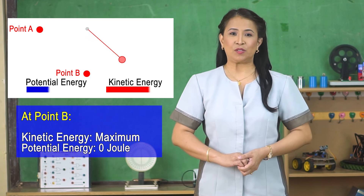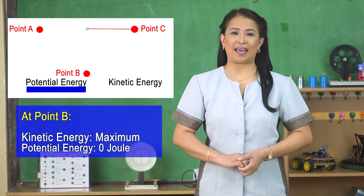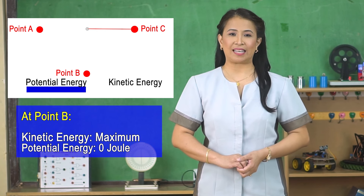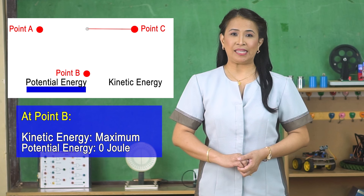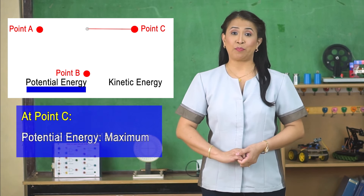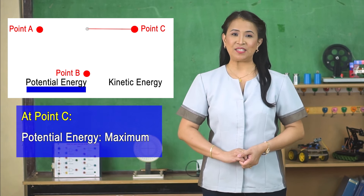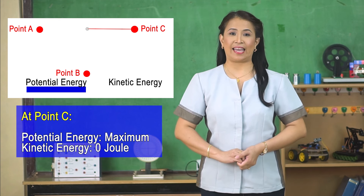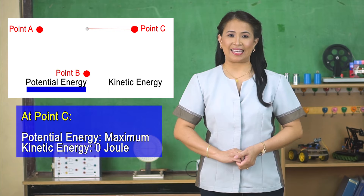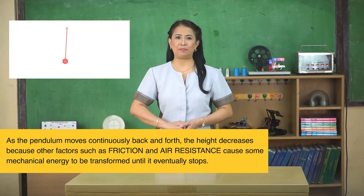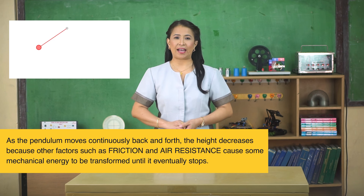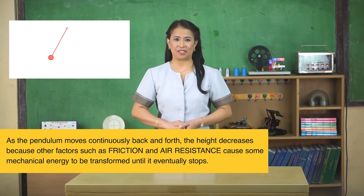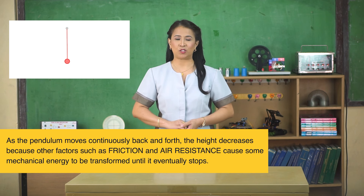Then it swings to point C with decreasing kinetic energy and increasing potential energy due to it being at a higher position. At point C, the potential energy is again maximum while the kinetic energy is zero, just like at point A. As the pendulum moves continuously back and forth, the height decreases because other factors such as friction and air resistance cause some mechanical energy to be transformed until it eventually stops.